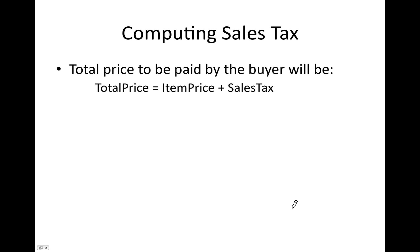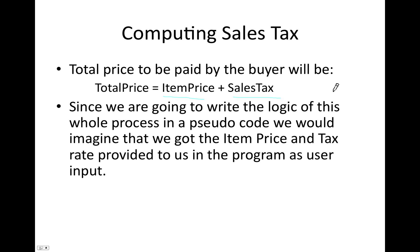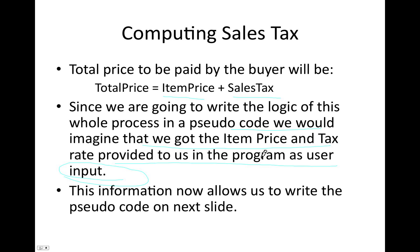The total price to be paid by the buyer will then be item price plus sales tax. Since we are writing the logic in pseudocode, we would imagine that item price and tax rate are provided as user input. The input on an actual cash register comes from a scanner or a stored tax rate, but in our program we'll simply prompt the user to input that data. Before writing pseudocode, you have to collect all this information — the formulas, how they are applied, and how the data is entered.